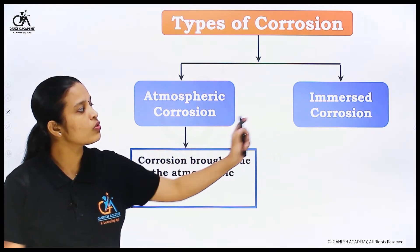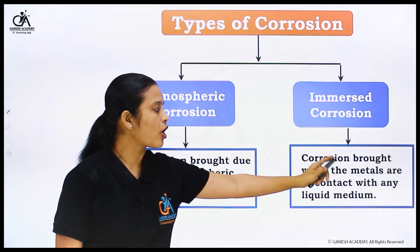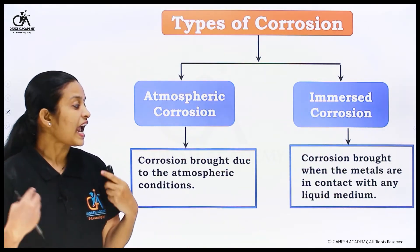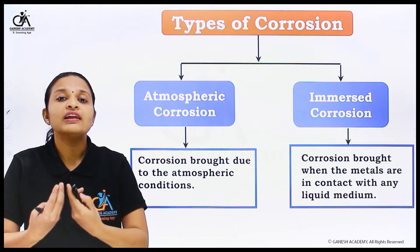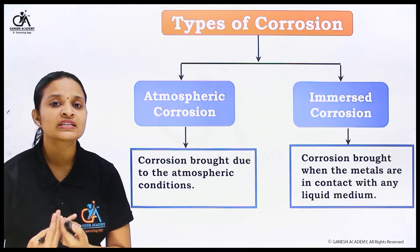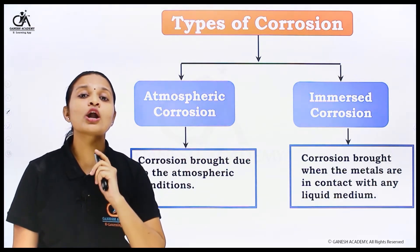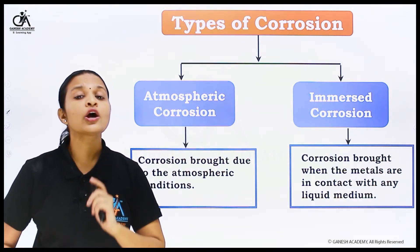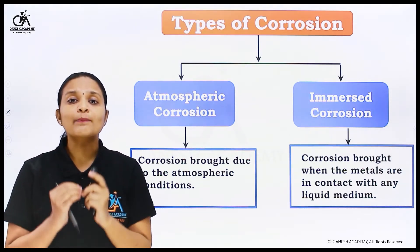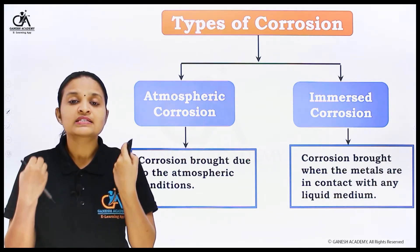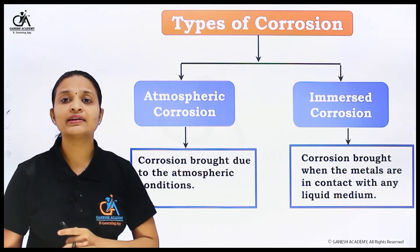Now, immersed corrosion means the corrosion that occurs when metals are in contact with any liquid medium. When that particular metal comes in contact with a liquid or a liquid conducting medium is available, immersed corrosion takes place. This type of corrosion is also called electrochemical corrosion or wet corrosion. In that case, the metal comes in contact with the liquid medium — the surrounding medium which is in liquid form — and corrosion takes place.